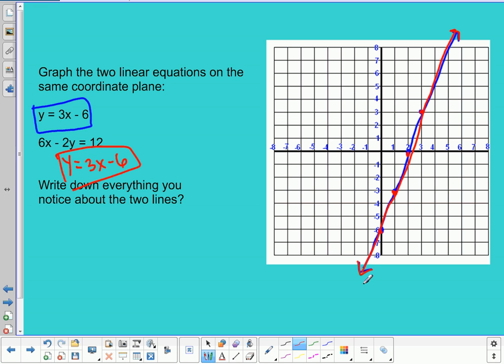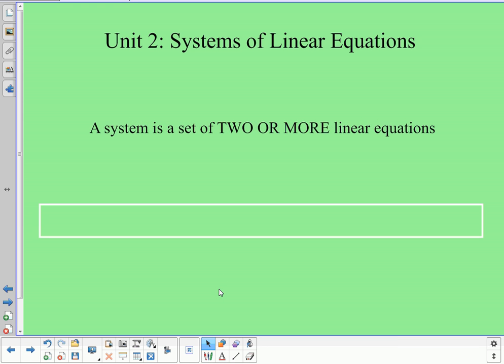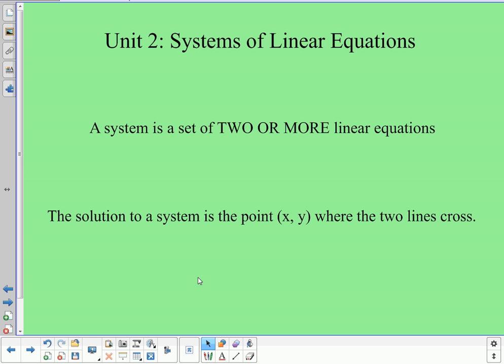Now, what these two examples are, are systems of equations. And what a system of equations is, is when we have two or more linear equations that are represented together. So a system is a set of two or more linear equations. The solution to the system is the point (x, y) where the two lines cross. The point where the two lines cross.